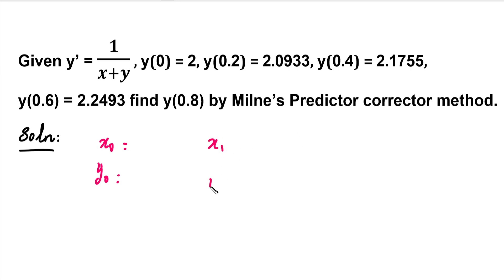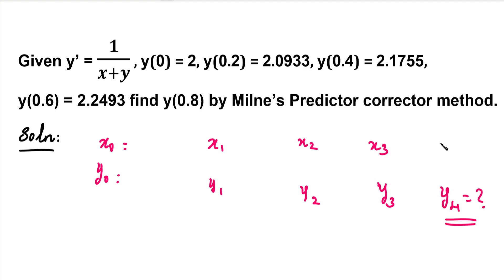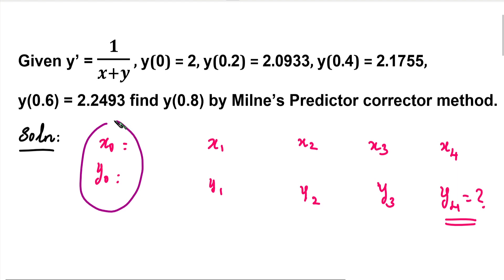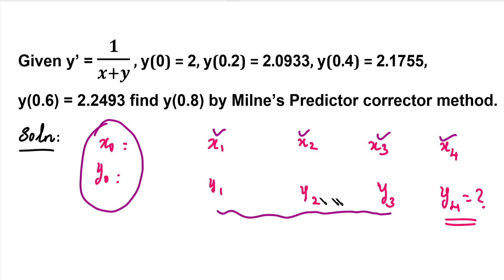If we apply this method, we will use x1, y1, x2, y2, x3, y3. In Milne's Predictor and Corrector method, we will use y4 as the correct value. This is the corresponding value of x. If we use x4, we will use all these values. We have x0, y0, and x1, x2, x3, x4. But y1, y2, y3 — we will use these three values to find y4.